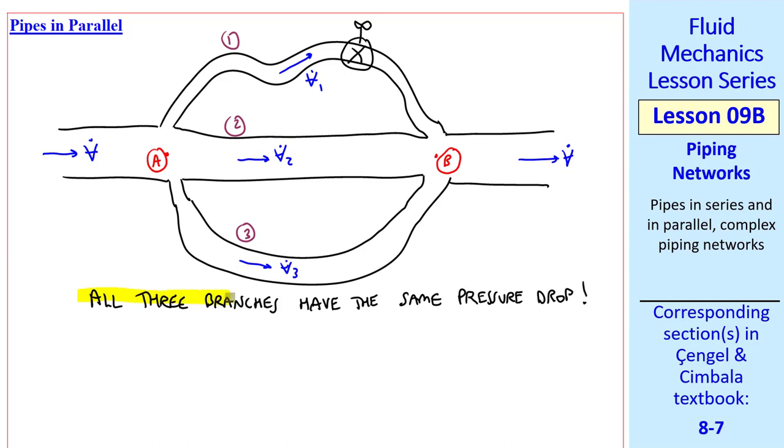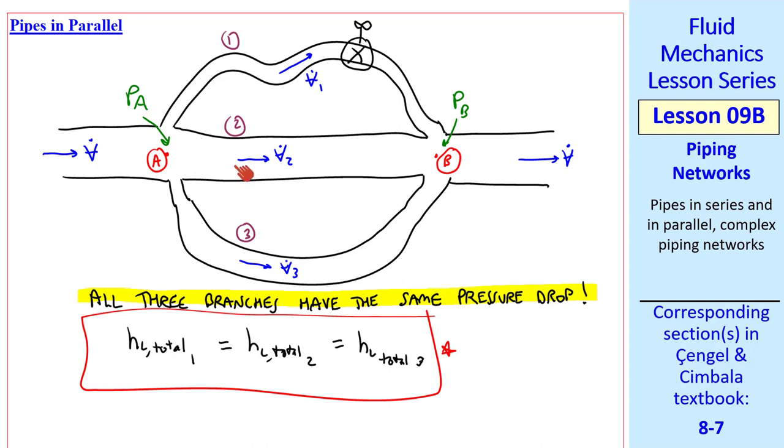It turns out, however, that all three branches have the same pressure drop. The pressure here is PA, pressure here is PB, and it doesn't matter which pipe branch you're going through. The pressure drop is PA minus PB for all three branches. In terms of head loss, HL total 1 must equal HL total 2 must equal HL total 3, since head loss is just pressure drop over rho G, and we have the same pressure drop.